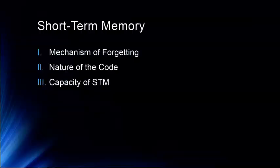Today we'll first talk about the mechanism of forgetting from short-term memory. By way of review, short-term memory covers roughly the last 30 seconds or so. Anything beyond 30 seconds is longer-term or long-term memory. This is immediate memory — information that has gotten past sensory memory — almost whatever is consciously going on in your head at the time.